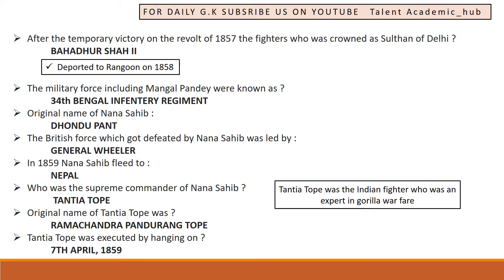The military force including Mangal Pandey were known as the 34th Bengal Infantry Regiment. The original name of Nana Sahib was Dundu Panth. The British officer who got defeated by Nana Sahib was General Wheeler.